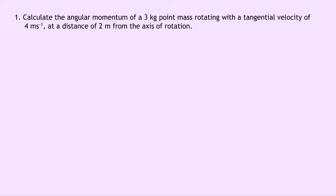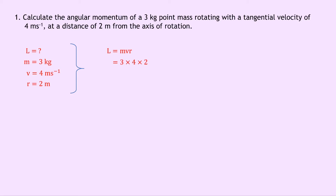Question one says to calculate the angular momentum of a three kilogram point mass rotating with a tangential velocity of four meters per second at a distance of two meters from the axis of rotation. Writing down what we know: we're asked to calculate angular momentum L, mass is three kilograms, tangential velocity is four meters per second, and the distance from the axis of rotation is two meters. Because we're dealing with a point mass, we use L equals MVR. Substituting in the numbers, we get three times four times two, which gives a final answer of 24 kilogram meters squared per second.